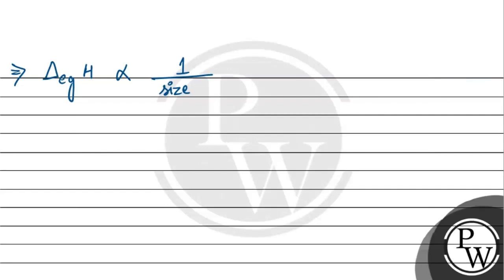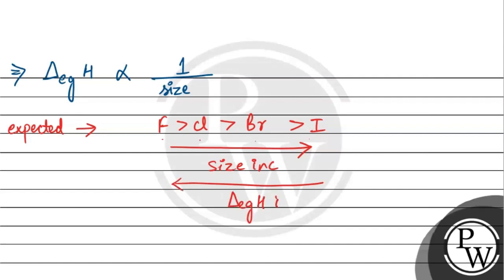Now what is expected? In halogens, what is expected is that we should see an order like this: as size increases down the group—fluorine, chlorine, bromine, iodine—going down the group, their size is increasing. So electron gain enthalpy should increase like this. This is what we expect.